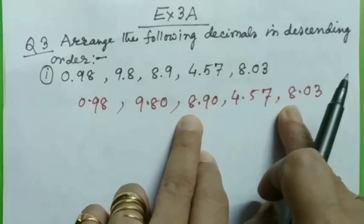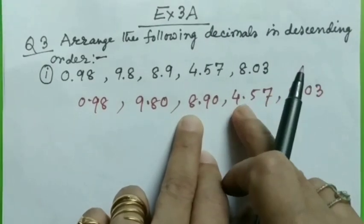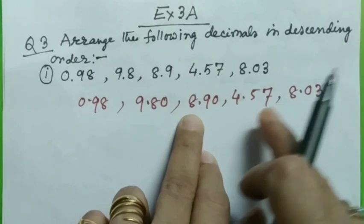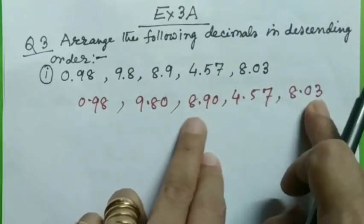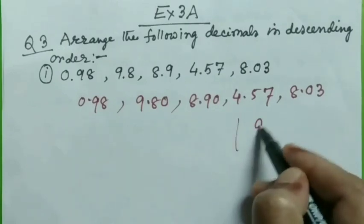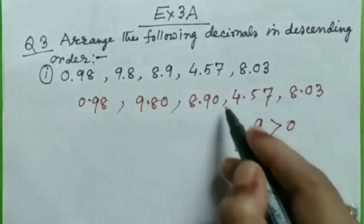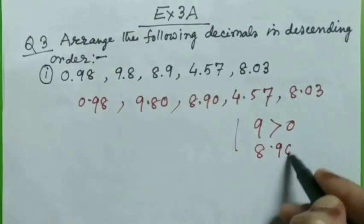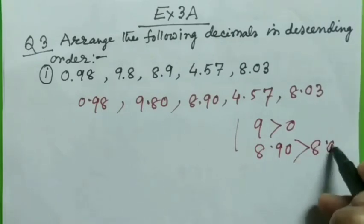And next we will get 8. But here you see, 8, there are two numbers having 8 as the whole part. So next we will compare tens place. Now you see, as 9 is greater than 0, 9 is greater than 0. Therefore 8.90 is greater than 8.03.